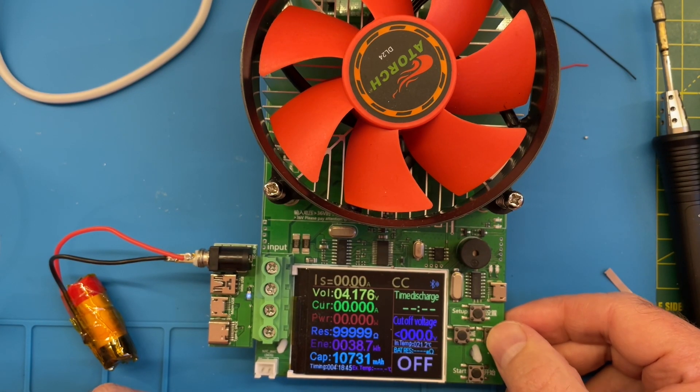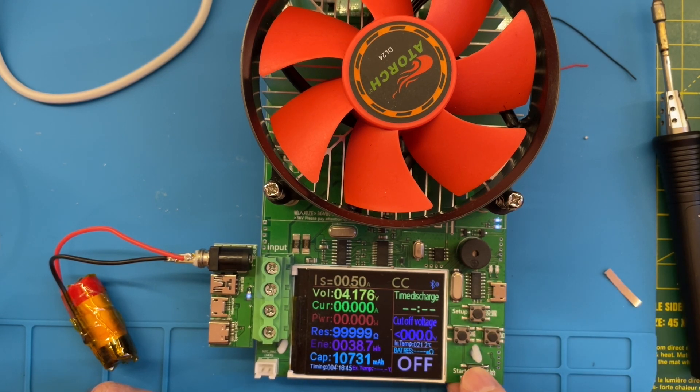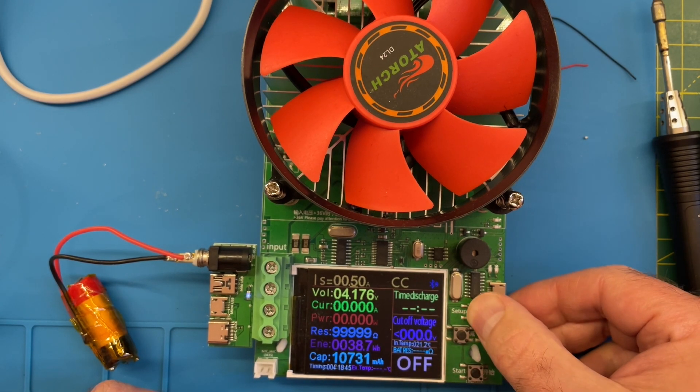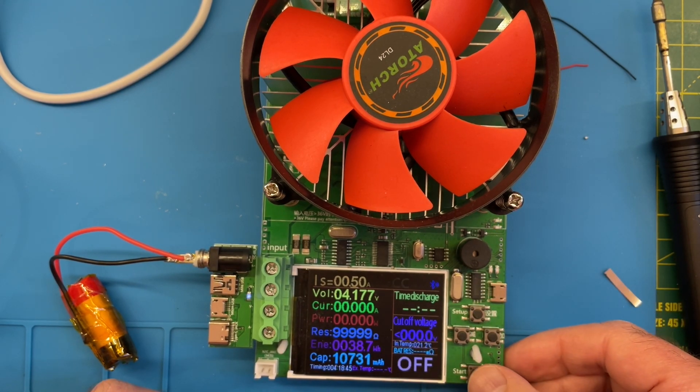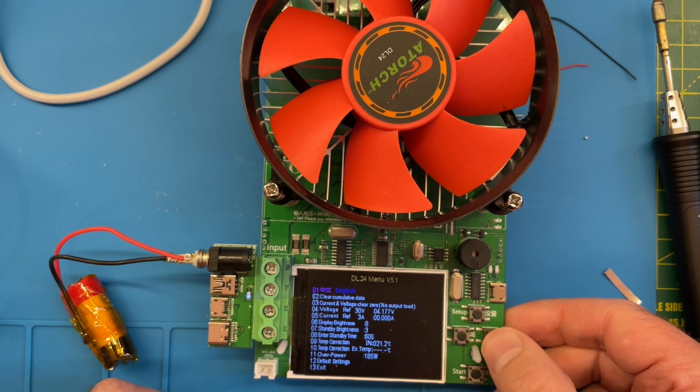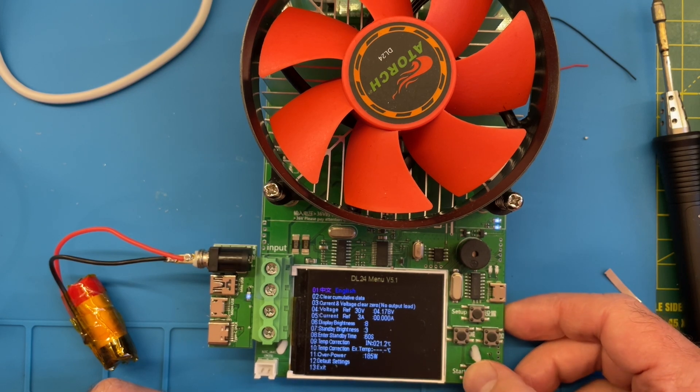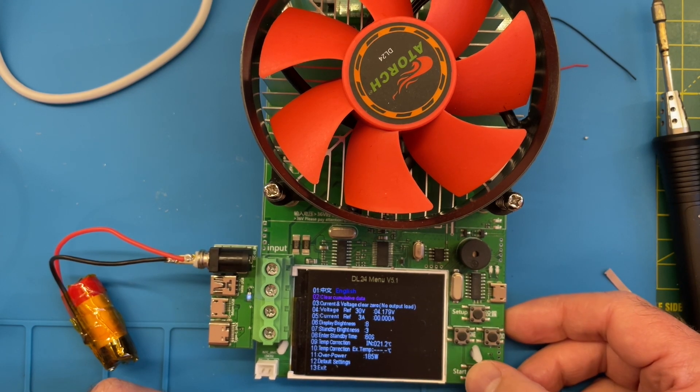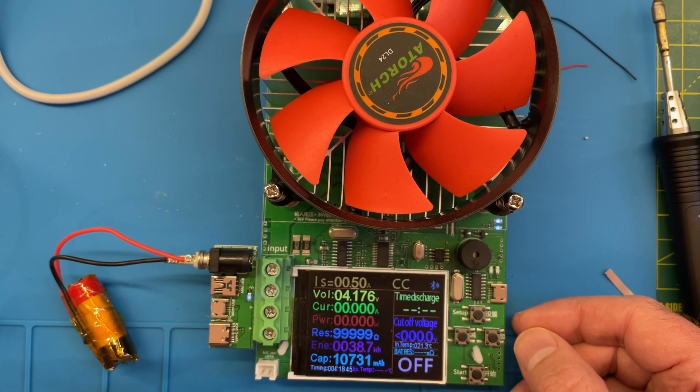So it's hooked into my load tester. We'll just try discharging it at half an amp and see what capacity we've got. We need to reset this, which I can't remember how to do. There we go. Clear data. Okay, that doesn't seem to have done anything. Our capacity still says that. I know there's some way of doing this.